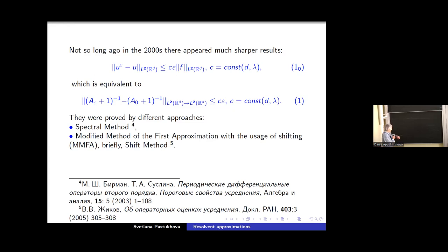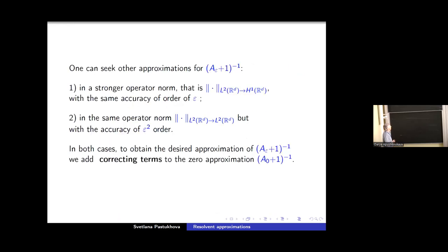According to the estimate one, you see that zero approximation for resolvent of A_ε in L^2 operator norm is the resolvent of the limit operator. We are interested in approximation of resolvent in other situation. First of all, in a stronger operator norm that is the norm from L^2 to H^1 called often energy operator norm with the same accuracy over ε. And we are interested also in approximation in the same operator norm from L^2 to L^2, but with accuracy of order ε^2. In both cases, we must add to zero approximation.